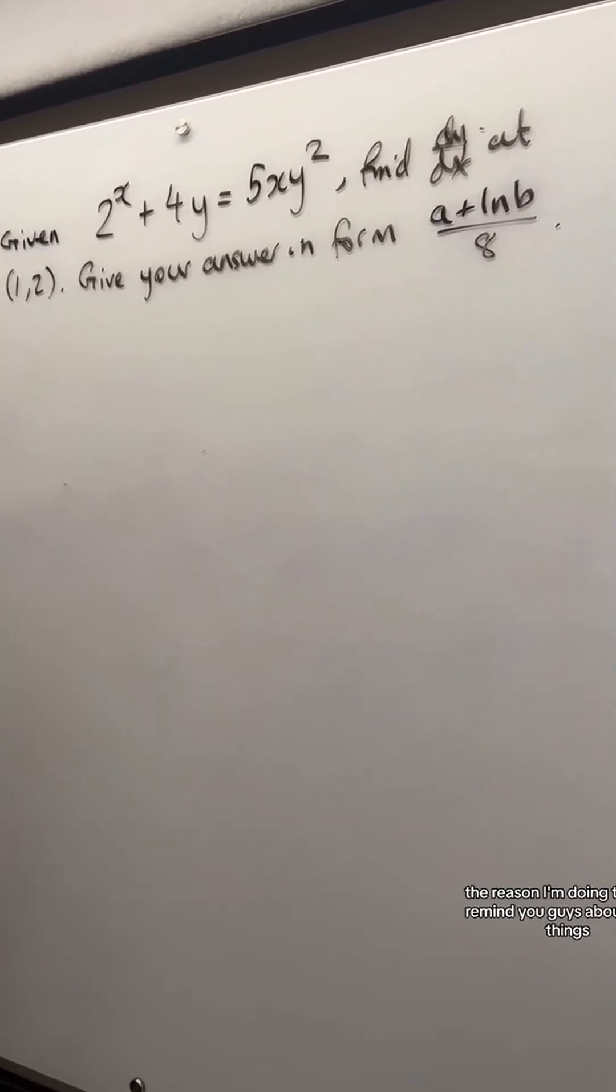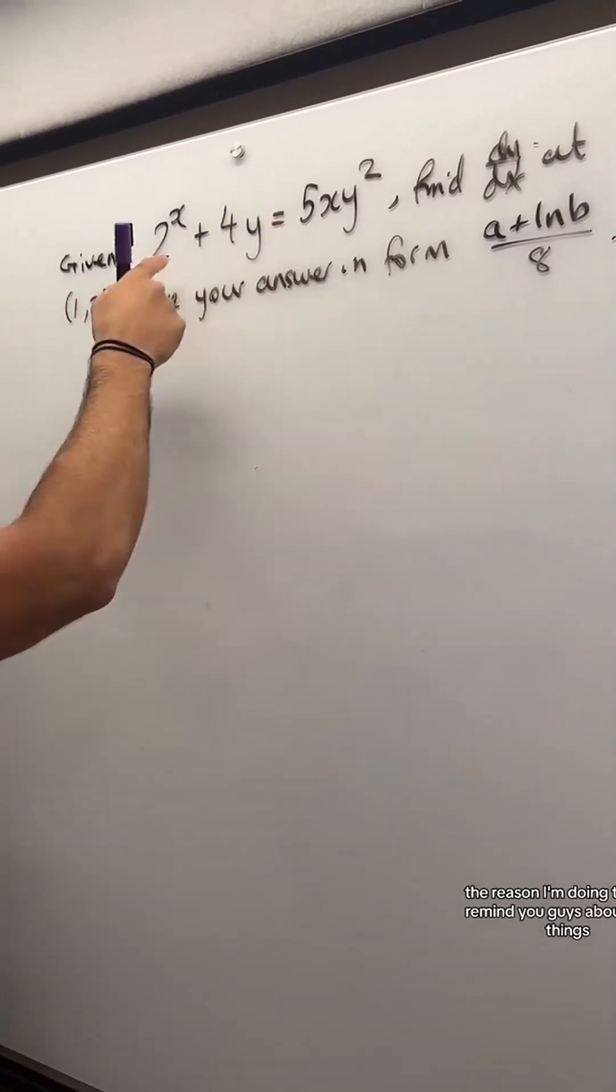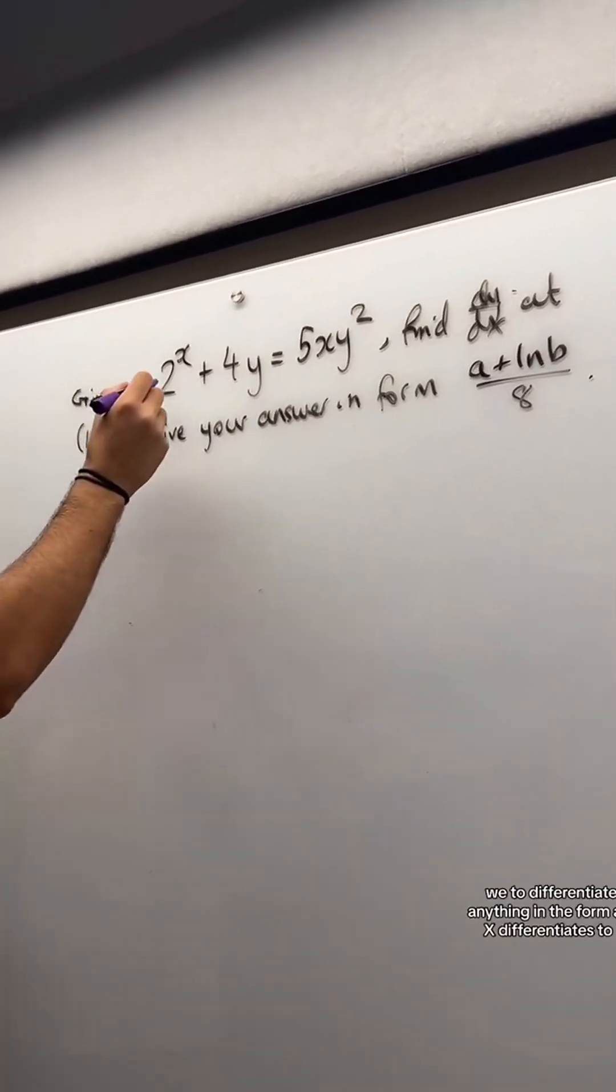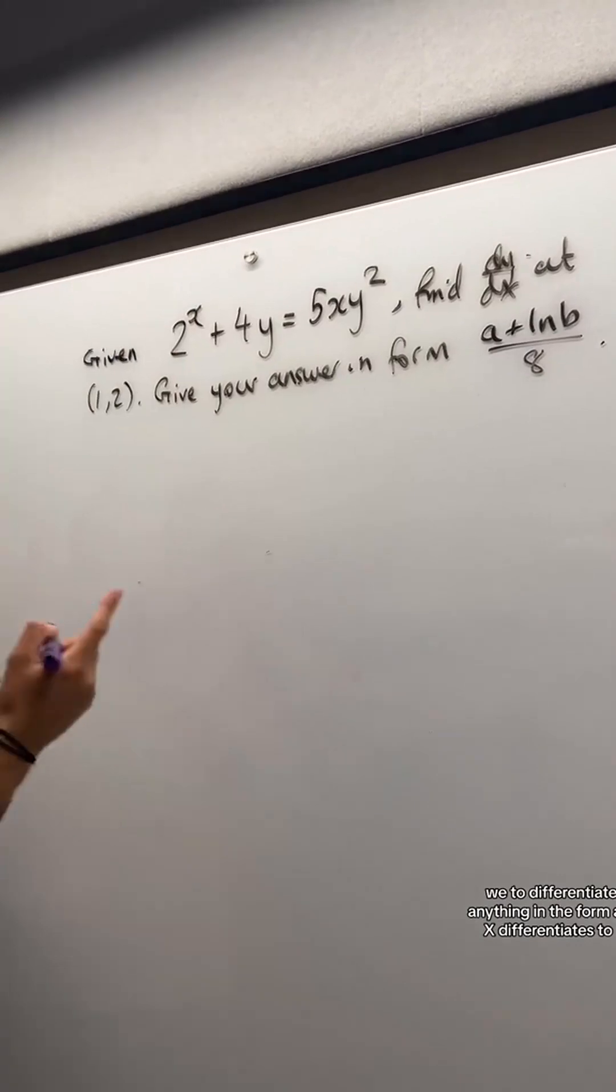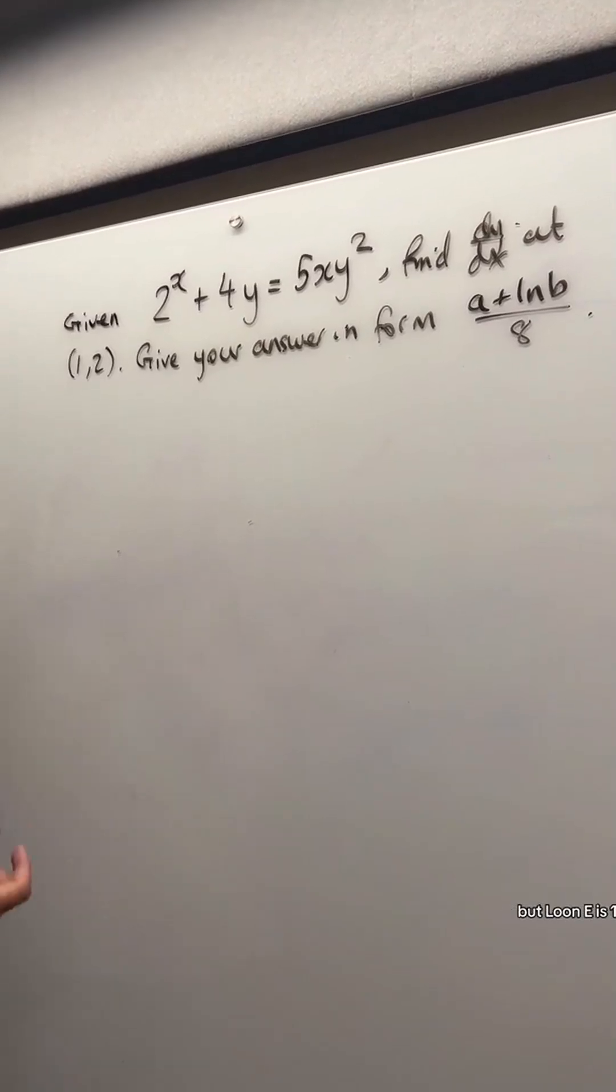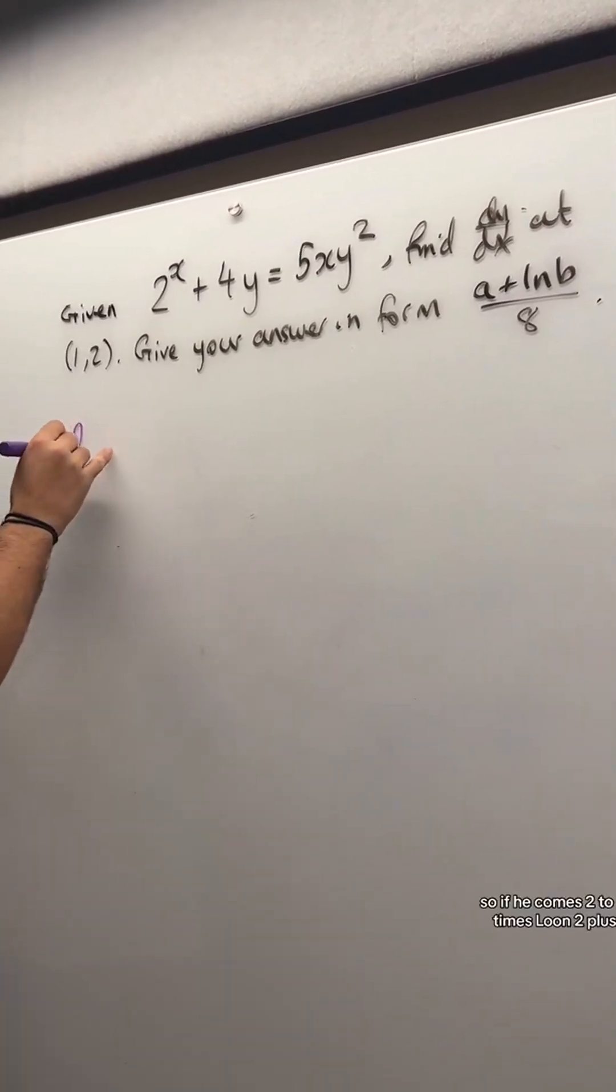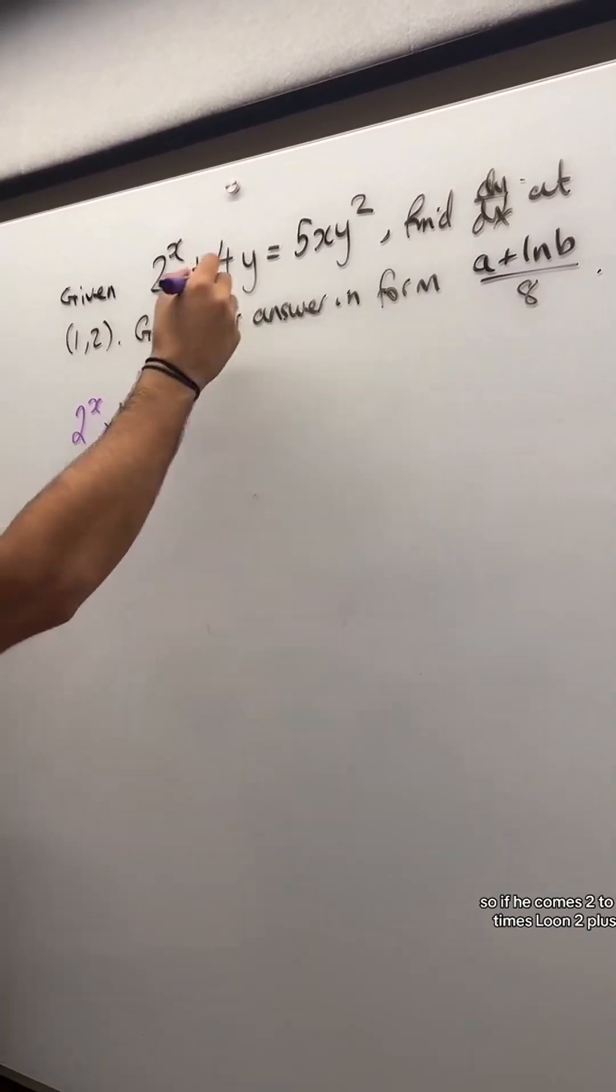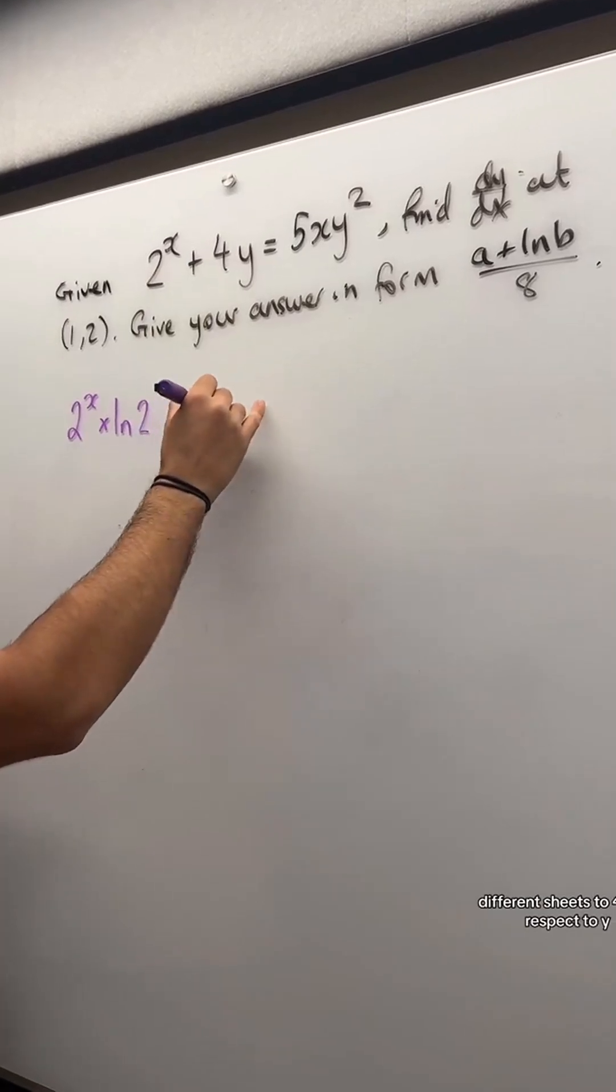The reason I'm doing this is to remind you guys about these things. So 2 to the x, we need to differentiate that. Anything in the form a to the x differentiates to ln(a) times a to the x. Even e follows this, but ln(e) is 1. So it becomes 2 to the x times ln(2).